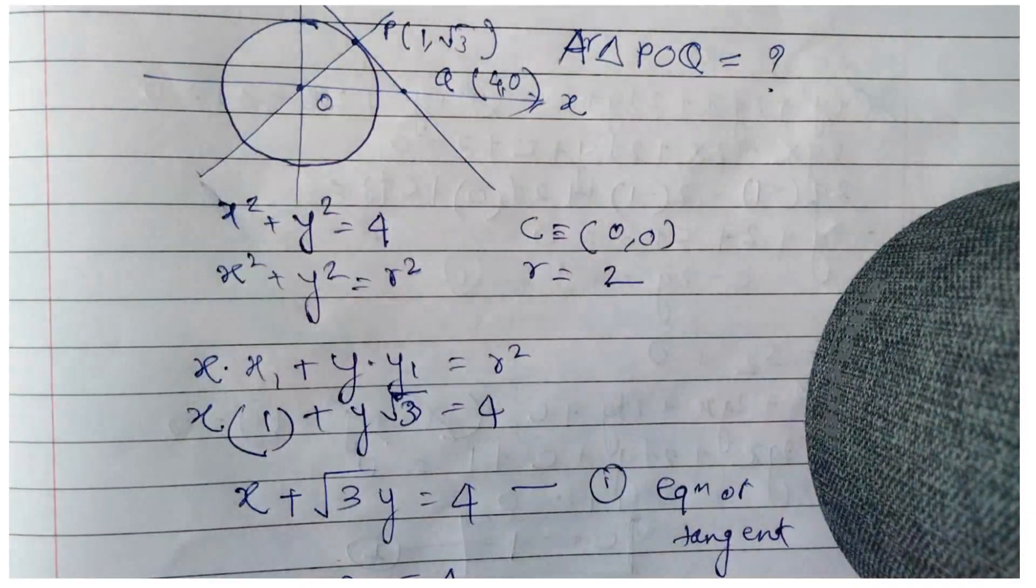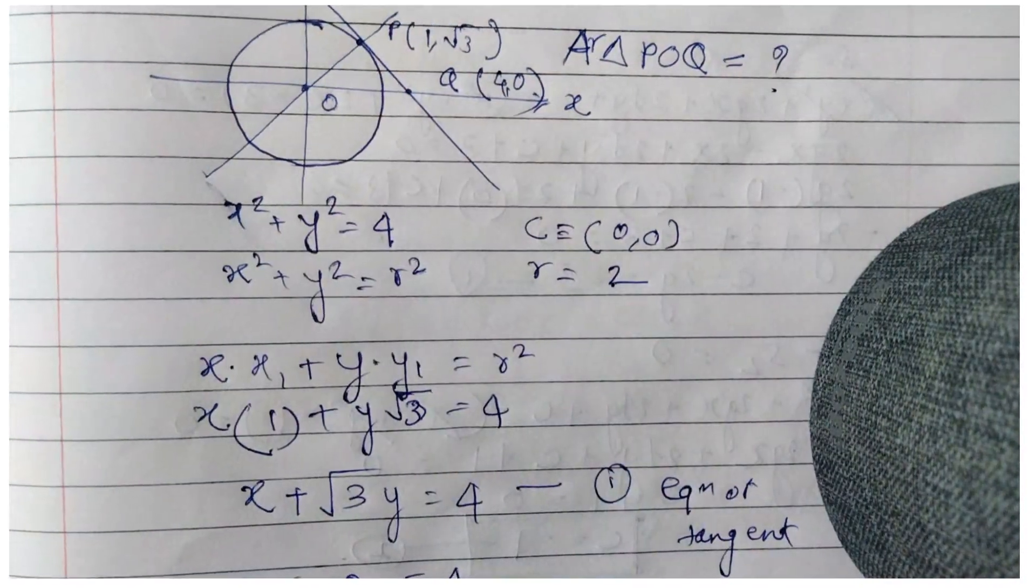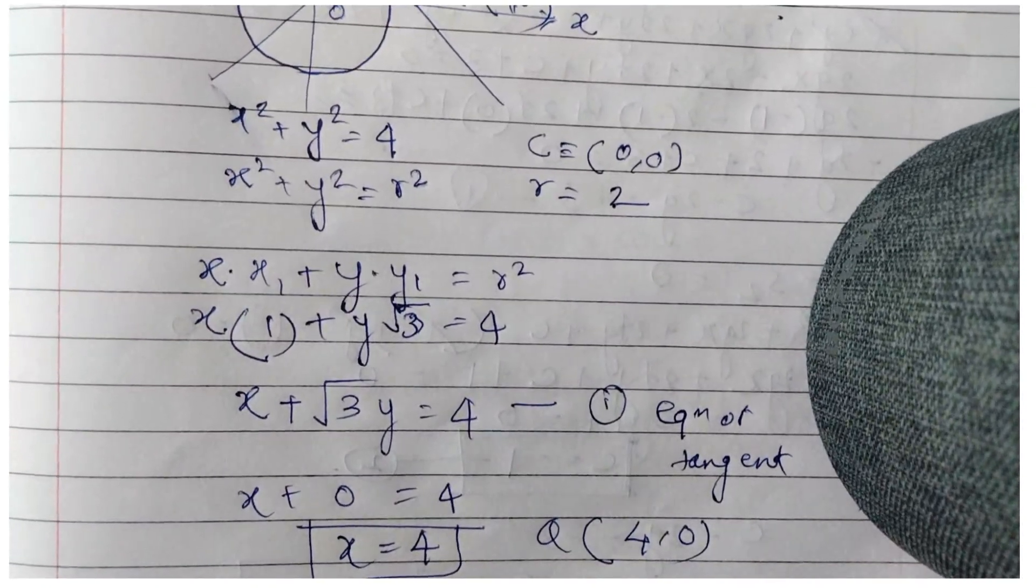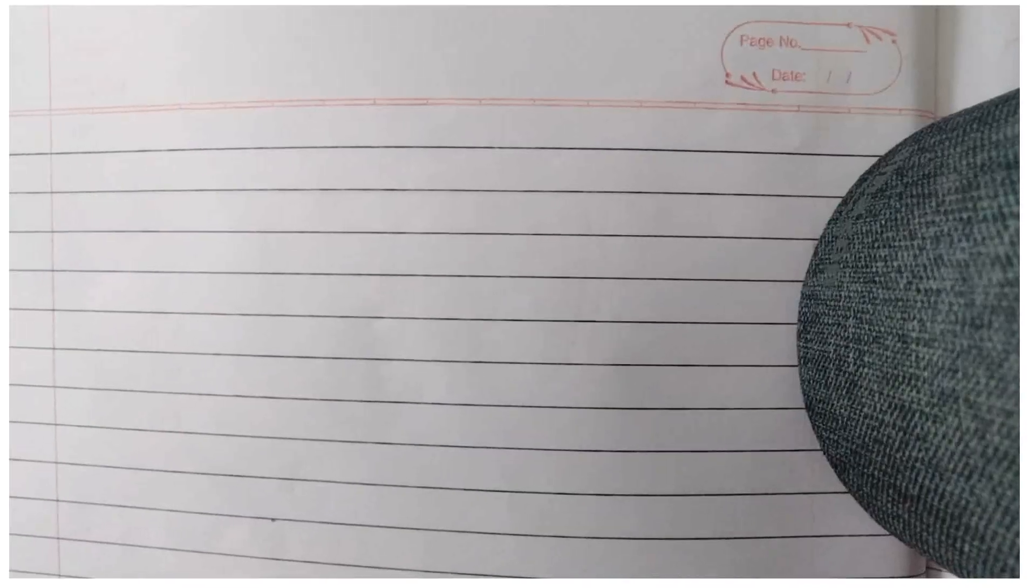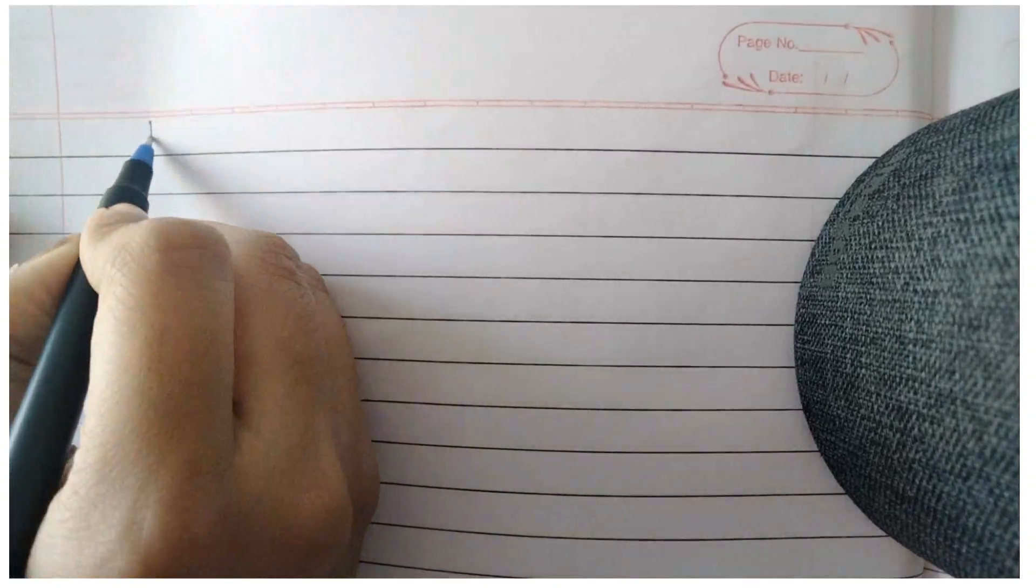Now we have all three vertices and can find the area of the triangle. Area equals half times base times height.